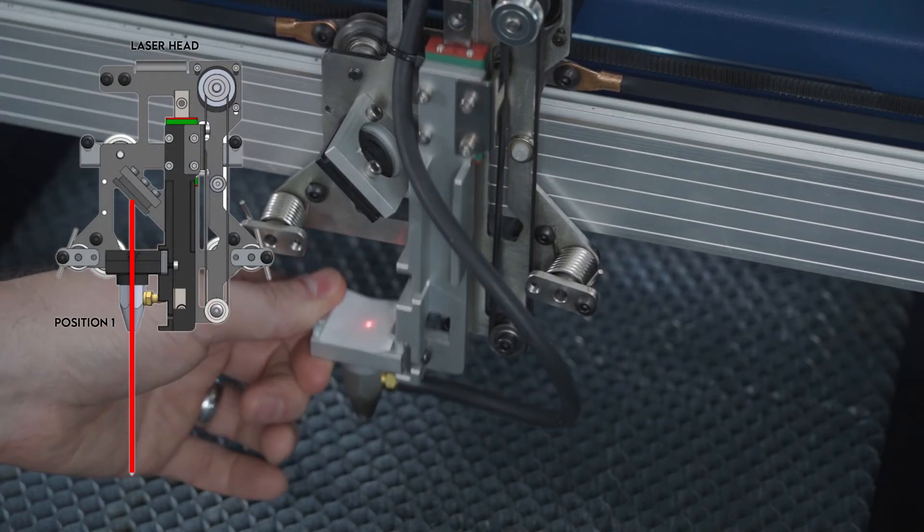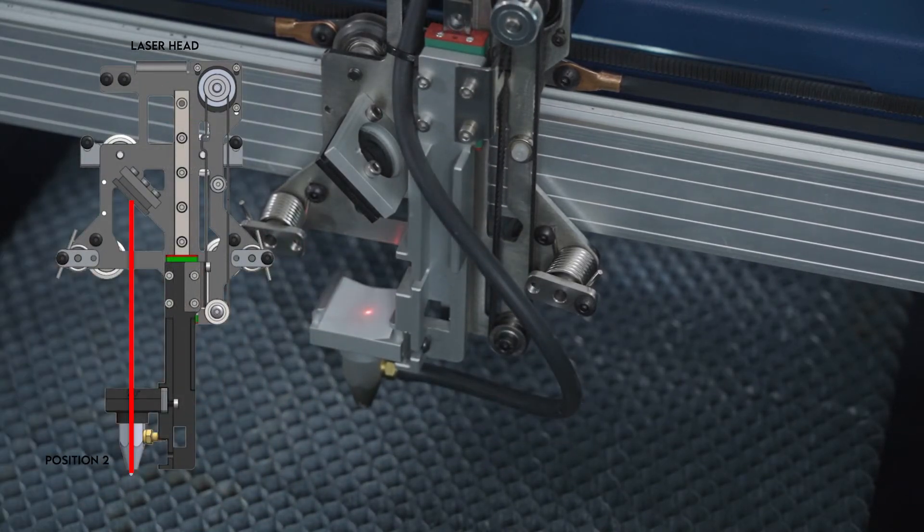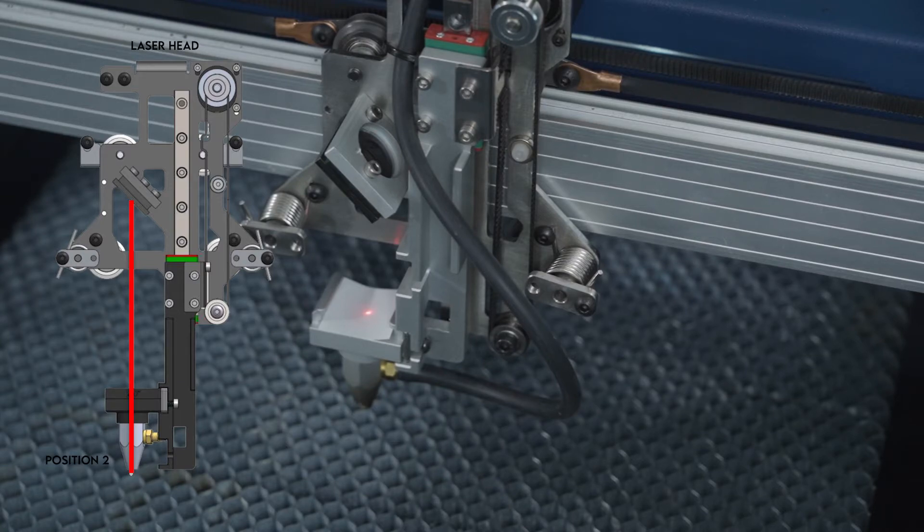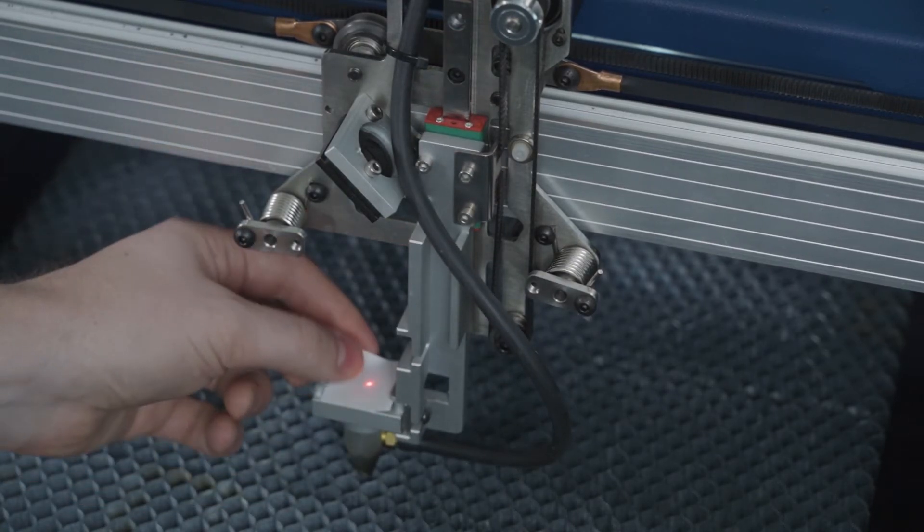Adjust the z-axis up and down to make sure the red dot does not move. If it does, go back to the previous step and adjust mirror three. Remove the thermal paper and put the lens back.